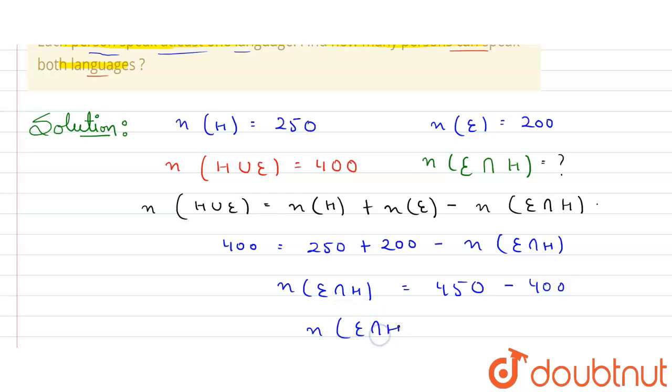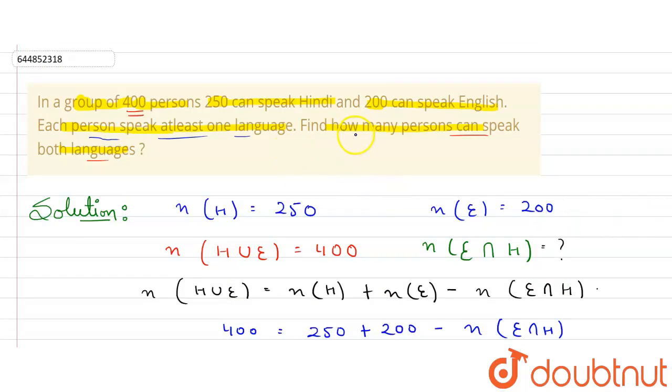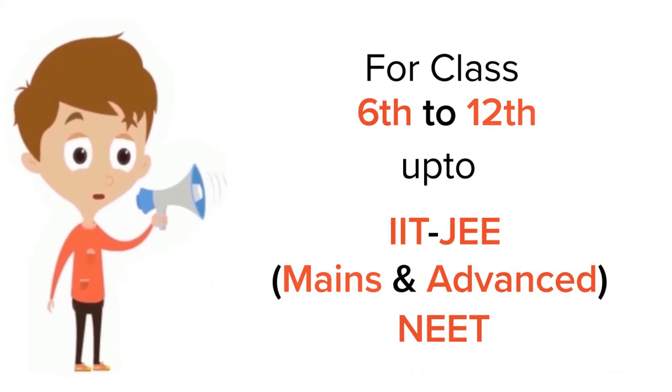English and Hindi, who can speak both languages is 50 here. 450 minus 400 is 50. So our answer is 50. We'll write here 50 people or 50 persons can speak both languages.